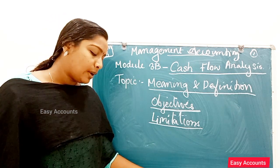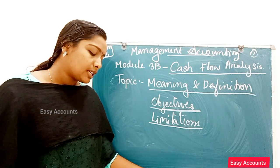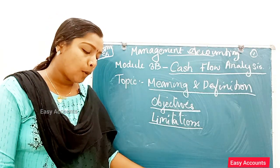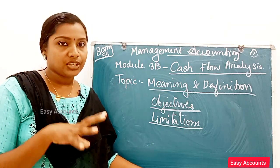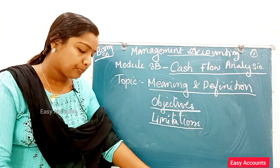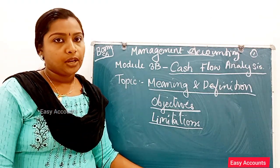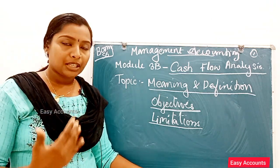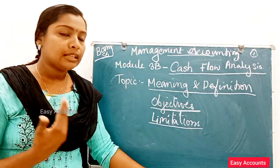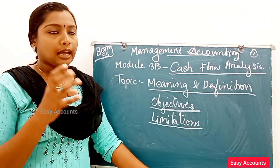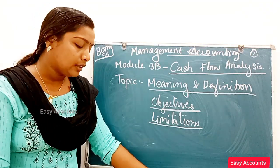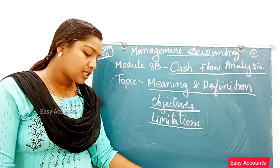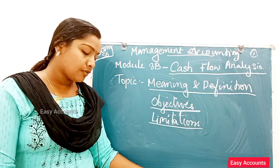Sixth, assessing liquidity and solvency position: the cash flow statement helps to evaluate whether the cash flow from operating activities is sufficient to meet various payments in the future. Seventh, supplying necessary information to users: the cash flow statement supplies various information relating to inflows and outflows of cash to the users of accounting information.